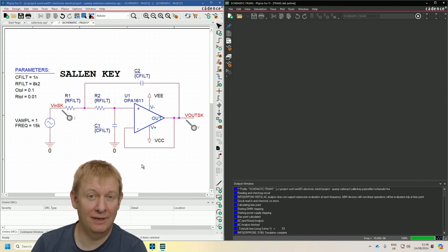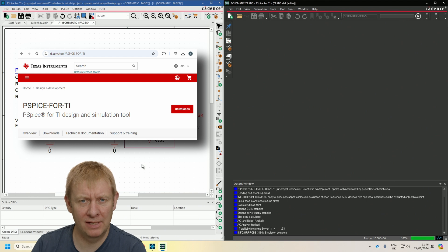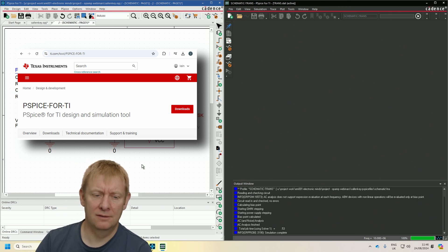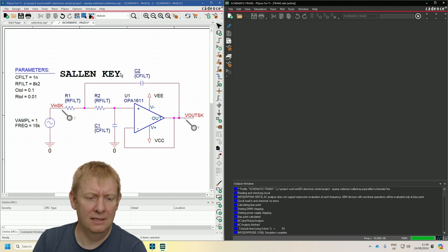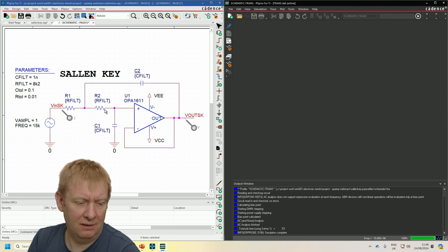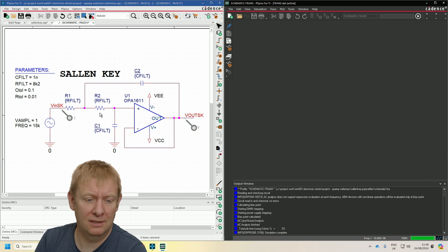Simulation is a useful step to help validate our circuit before we build it. Luckily, there's a version of PSPICE available from TI for free. On the left side of the screen is our simulation circuit using an OPA1611 op-amp. For our low-pass filter, we're using a 1 nanofarad cap for both capacitors and an 8.2k resistor for both resistors. Those values give us a basic cutoff frequency of about 20 kilohertz.